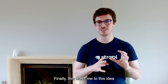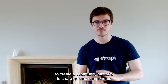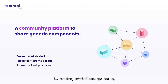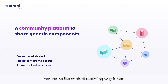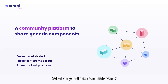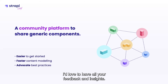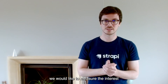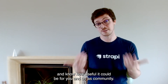This demo leads me to an idea: to create a community platform to share generic components between each other as a community. It will be easier to get started by reusing pre-built components, it will advocate best practices, avoid mistakes, and make content modeling way faster. We also imagine a public and private collection of components for personal use. What do you think about this idea? I would love to have all your feedback — feel free to react in the chat, on Twitter, or on our forum at forum.strapi.io. Today it's just an idea, and we'd like to measure the interest.